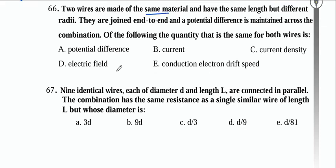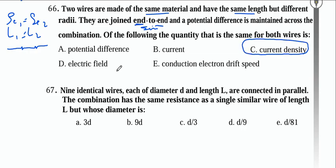Two wires of same material and same length but different radii are joined end-to-end (series). The potential difference is maintained across the combination. In series, current intensity is the same for both — that is the quantity that remains constant.